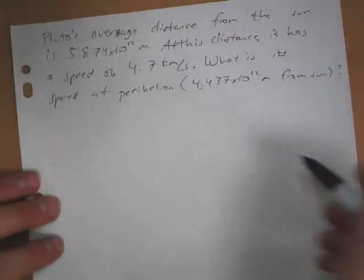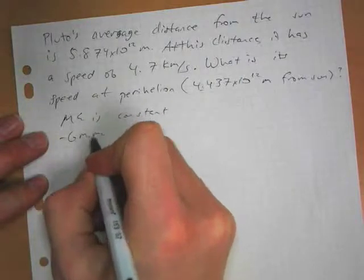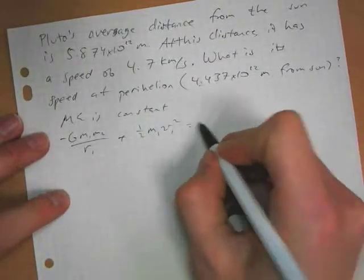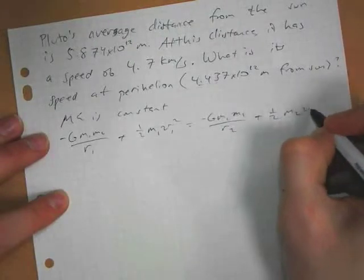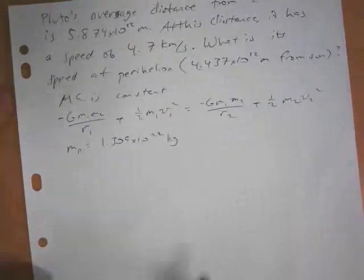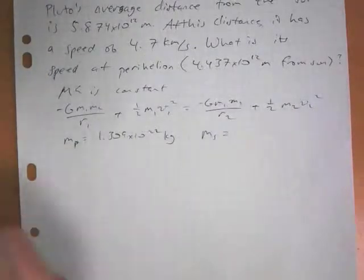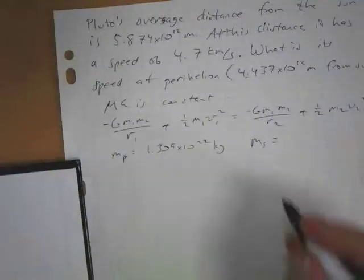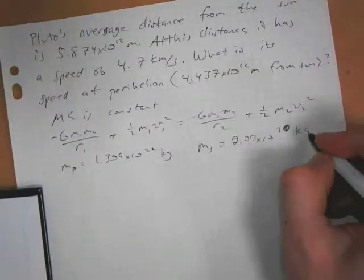Well, we know that mechanical energy is constant. So we can take our potential energy 1 plus kinetic energy 1 and set that equal to potential energy 2 plus kinetic energy 2. And if I look at the Internet, I find that Pluto's mass is 1.309 times 10 to the 22nd kilograms. The mass of the Sun is in your textbook, and it is 2.00 times 10 to the 30th kilograms.